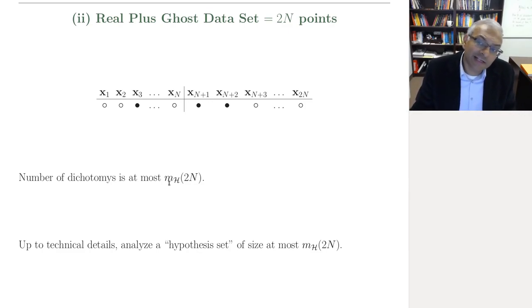So basically, up to technical details, which I'm ignoring here, and you can find in the text, ultimately, everything boils down to analyzing a hypothesis set of effective size m_H of two n.